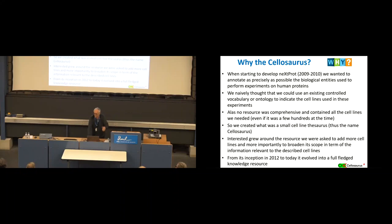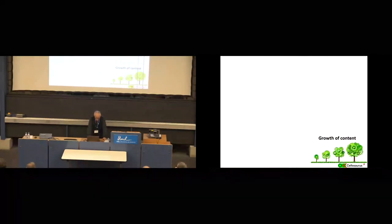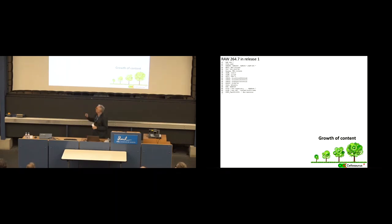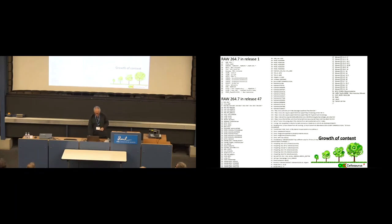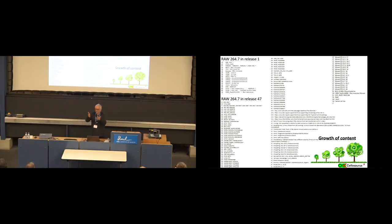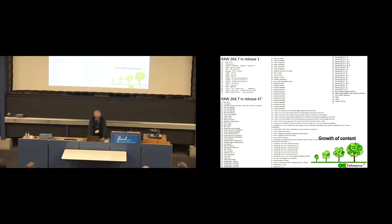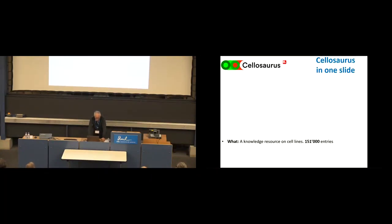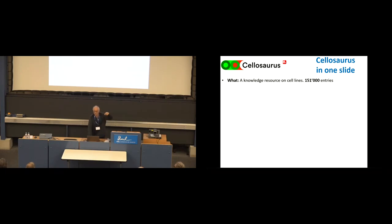It evolved into what is now a knowledge resource - a biocurated resource, as Christophe explained. Just visually: here is an entry in the first release of a mouse cell line and it's only eight or ten lines. Here is the same entry in the current version - from a thesaurus to an encyclopedic knowledge resource. In one slide: the Cellosaurus is a knowledge resource on cell lines covering 150,000 entries, with a new version coming up in a few weeks that will have 151,000 cell lines - far from the 100 we originally needed to annotate.